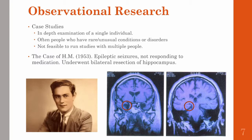After surgery, HM was completely normal except for the fact that he now had what's known as anterograde amnesia. He could carry on conversations and remember things from his past, but he couldn't form any new memories. So in a matter of minutes, he would forget the name of the person he was talking to or forget what he was doing just a minute ago. This is an extremely rare case that we really can't study at the group level.